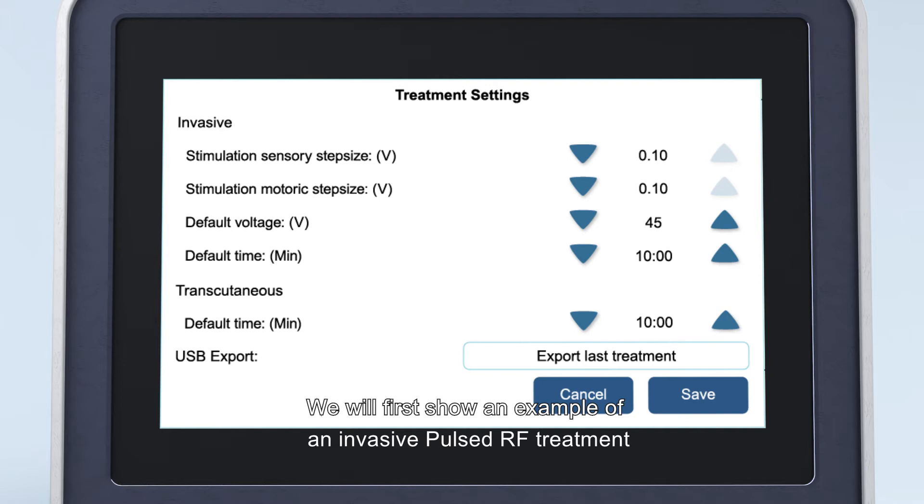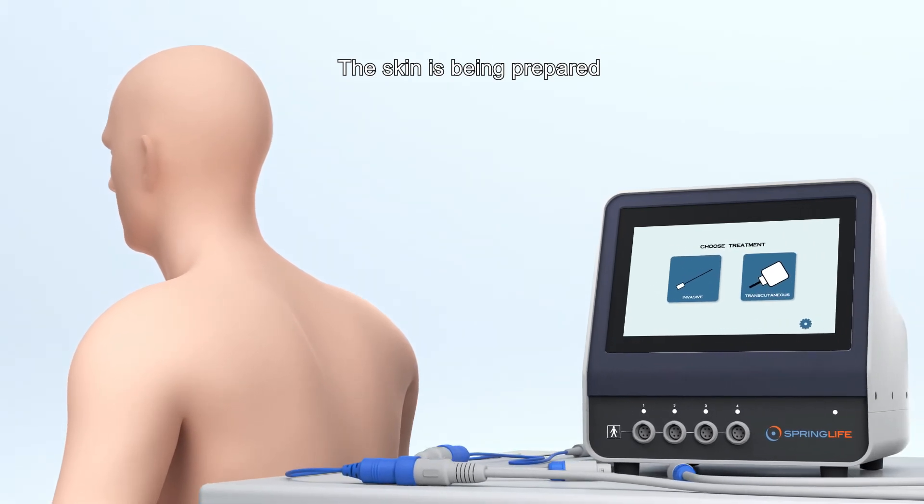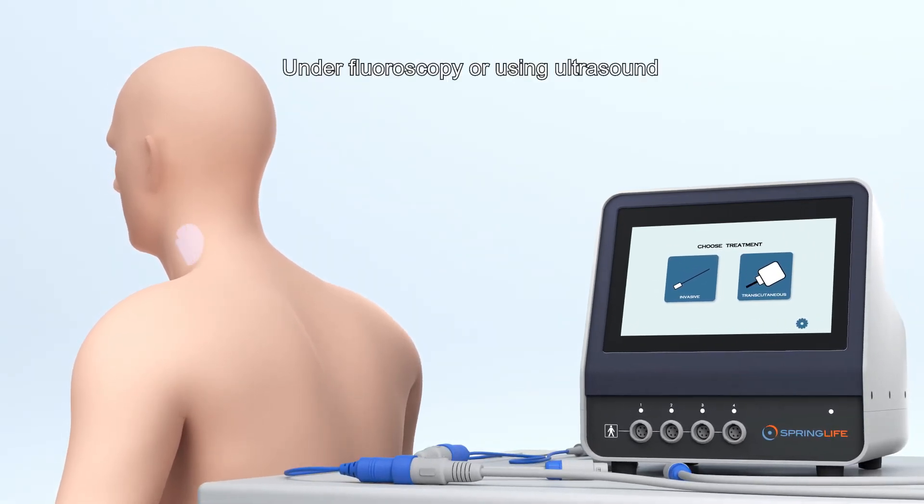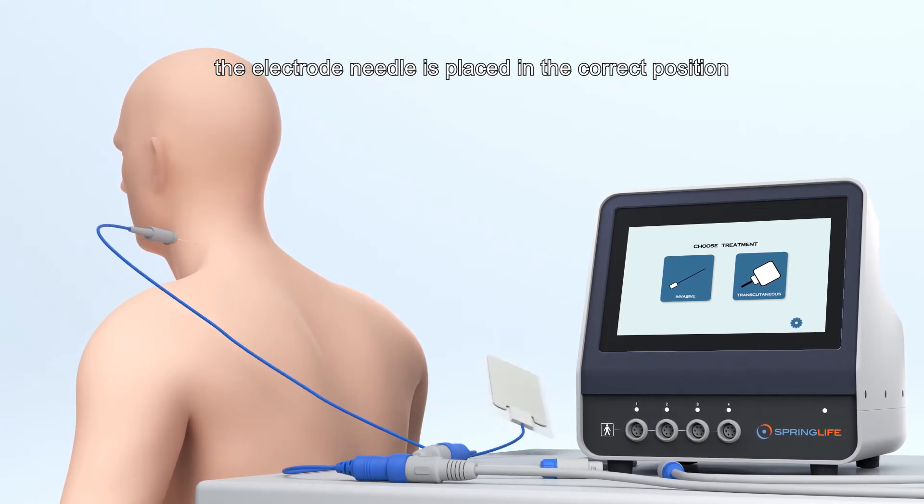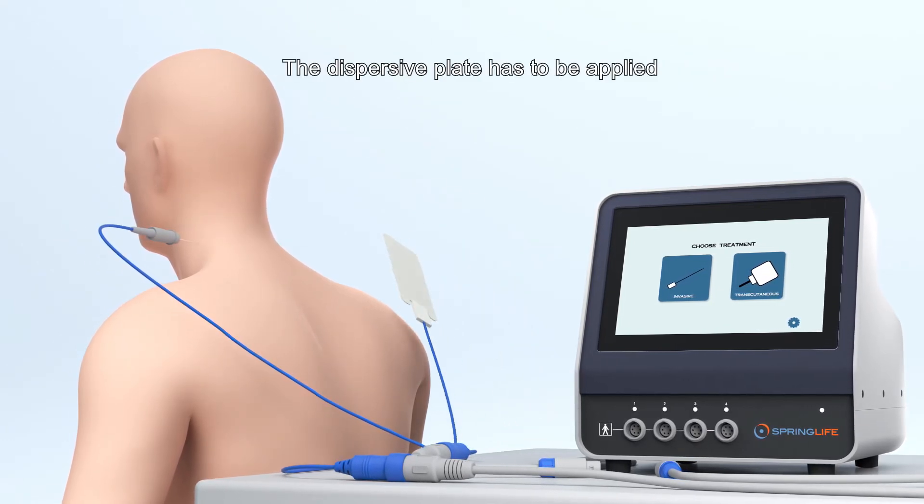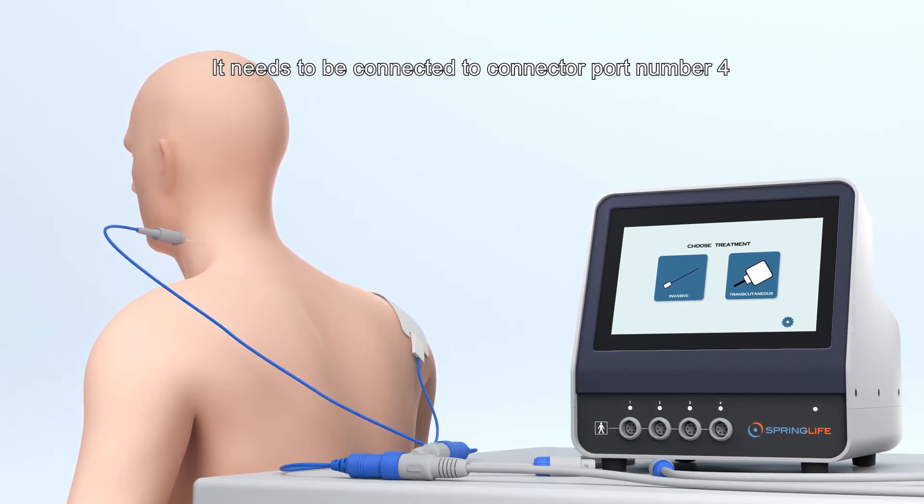We will first show an example of an invasive pulsed RF treatment. The skin is being prepared. Under fluoroscopy or using ultrasound, the electrode needle is placed in the correct position. The dispersive plate has to be applied. It needs to be connected to connector port number 4.